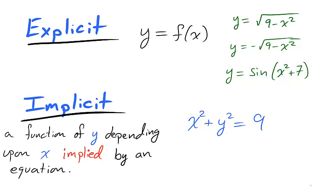Take our equation of the circle, x squared plus y squared equals 9. We've seen four functions which have been implicitly described by this equation.